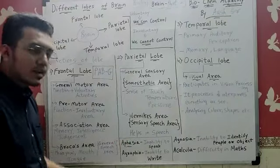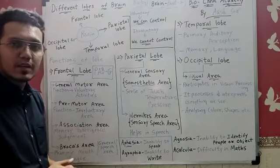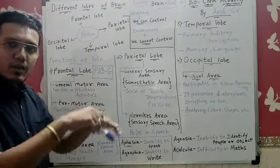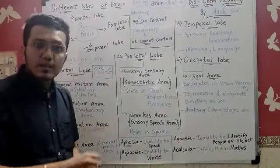Aphasia: what is the meaning of it? Person will not be able to speak. Inability to speak. Agraphia: graph paper for maths, graph draw statistics.